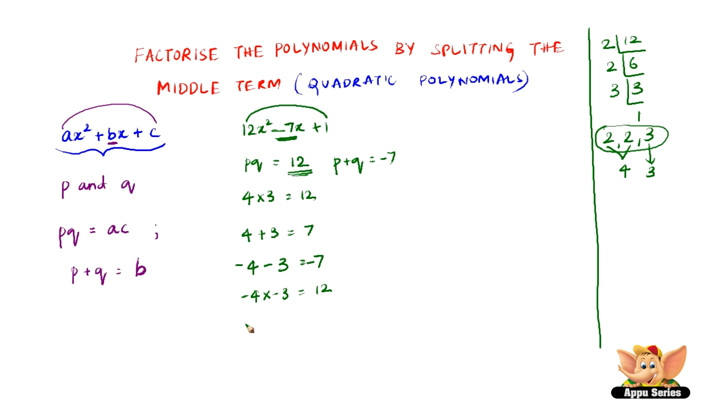So all we need to do now is write 12x squared and write minus 7x in terms of p and q that is minus 4x minus 3x and write plus 1 as it is. So now group these two and these two and take out the terms that are common. So here the common term is 4x. So 4x into 3x gives us 12x squared, into 1 gives us 4x or into minus 1 gives us minus 4x.